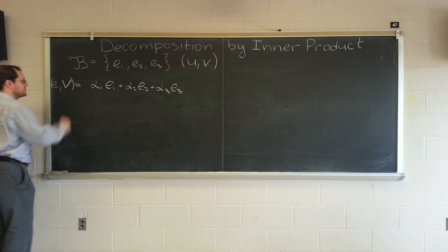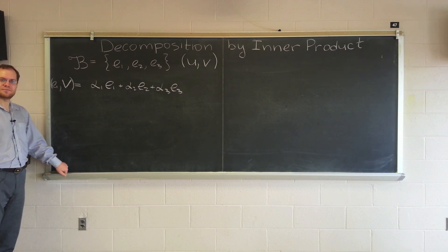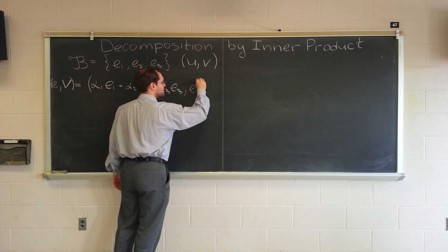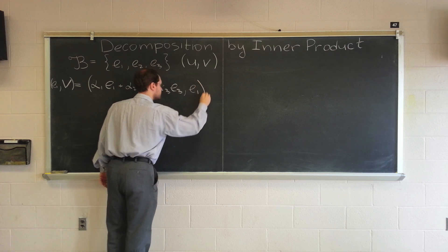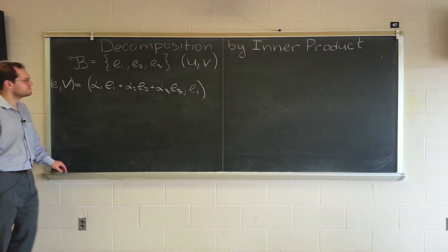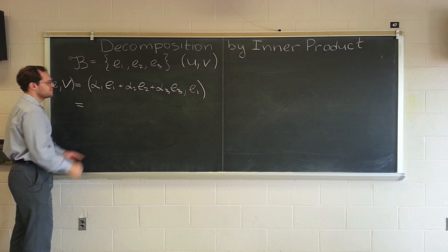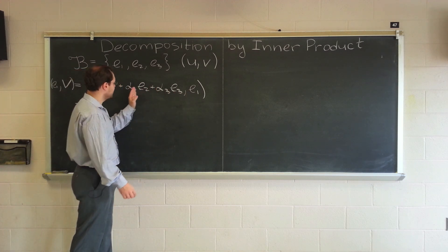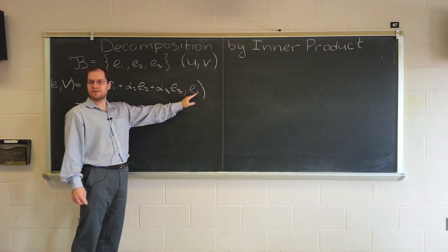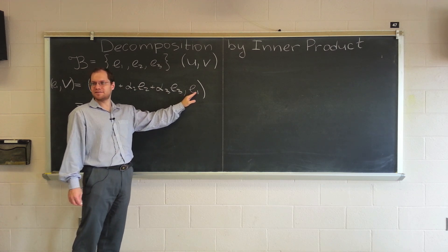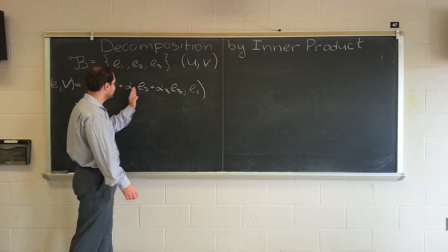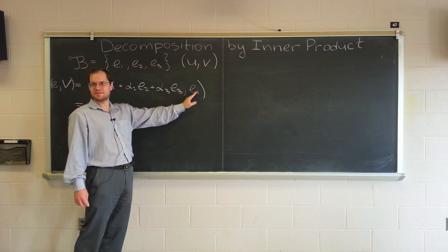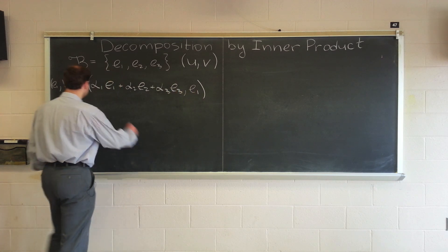The order doesn't matter because the inner product is symmetric, and you can think of this being the dot product in geometric vectors. Once I expand it, I will have alpha1 e1 dotting e1, and e2 dotting e1 which is zero because I'm stating that the basis is orthogonal, and e3 dotted with e1 which is zero because the basis is orthogonal. But let me write them anyway so that I can have the pleasure of crossing them out.